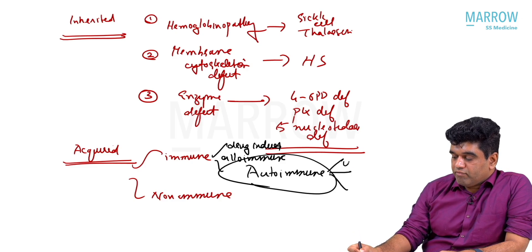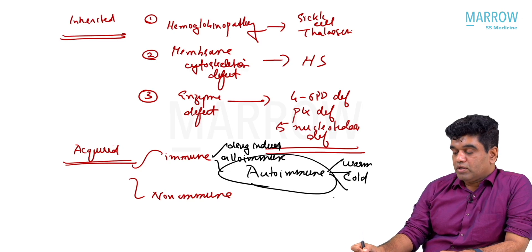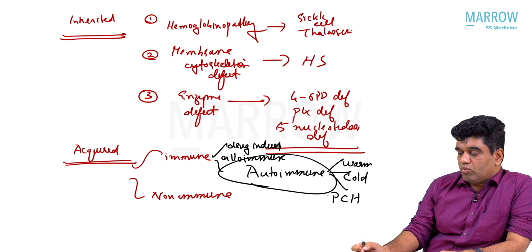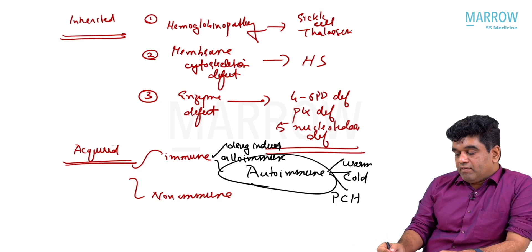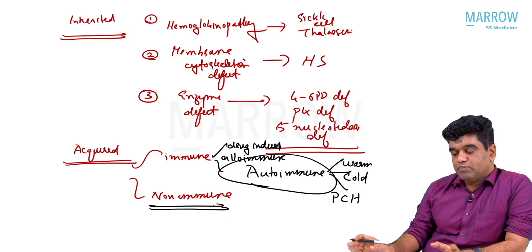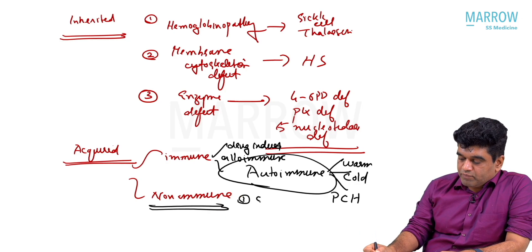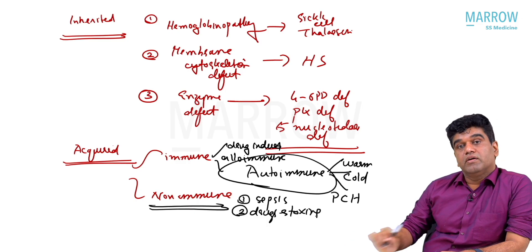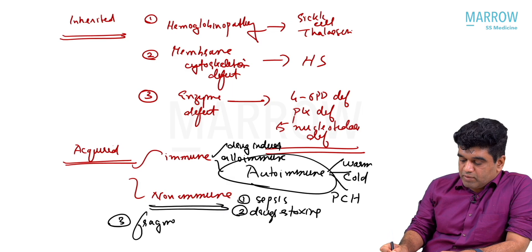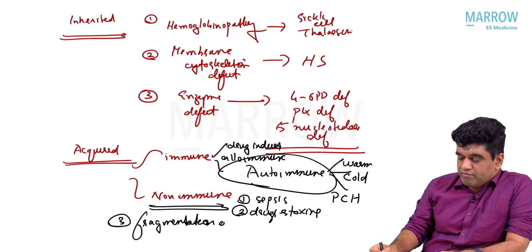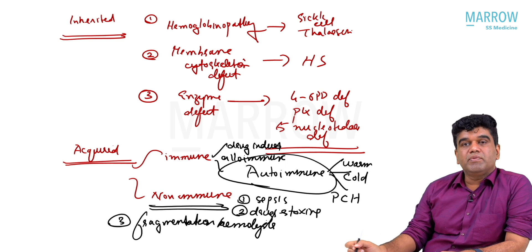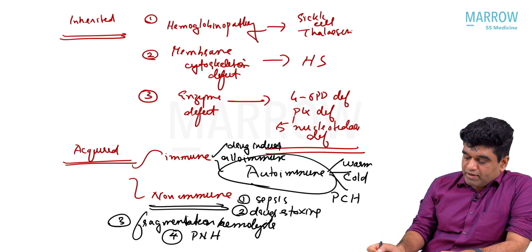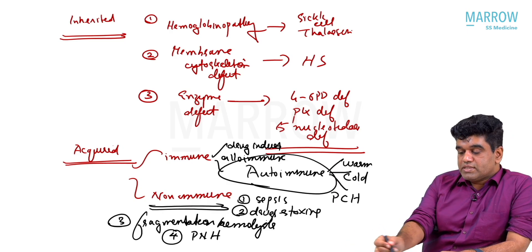Non-immune acquired causes for hemolysis include sepsis, drugs and toxins. Most importantly, there is fragmentation hemolysis — a mechanical destruction of RBCs, the prototype example being the TMAs. We also have paroxysmal nocturnal hemoglobinuria (PNH). So under non-immune: fragmentation hemolysis, PNH, drugs and toxins, and sepsis.